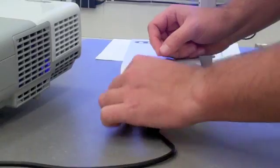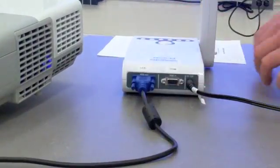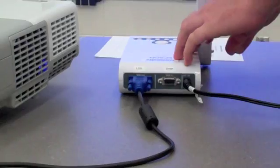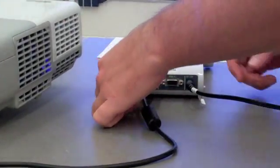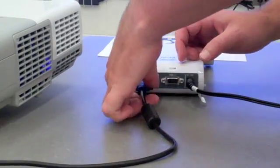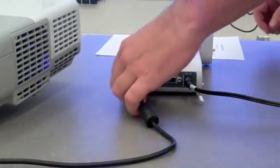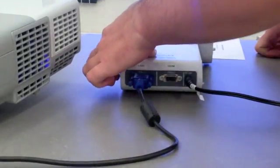The reason it's VGA out is because the information is going from the document camera out into our projector. We'll put that in there, screw it in nice and tight, and then we're just going to hit our power button.